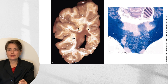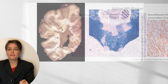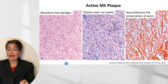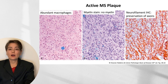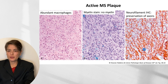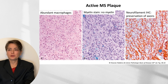On a myelin stain of the brainstem, healthy myelin stains a nice dark blue, and you can see discrete lesions scattered in the area. Histologically, in an active multiple sclerosis plaque, the vast majority of cells are macrophages filled with myelin debris. A myelin stain shows no myelin in the surrounding tissue, but an immunohistochemical stain for neurofilaments confirms that the axons are preserved — the classic finding of loss of myelin with preservation of axons.